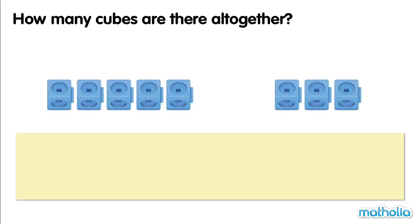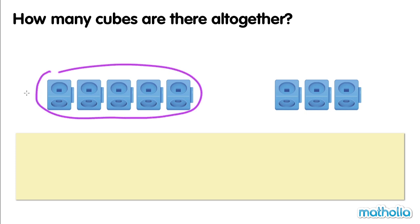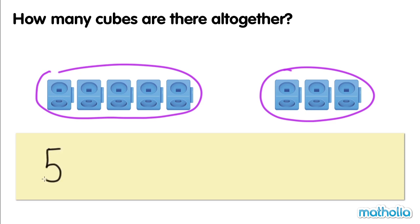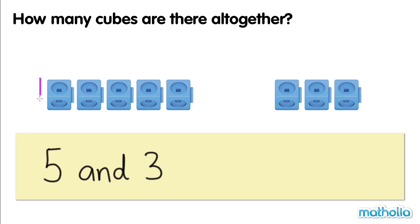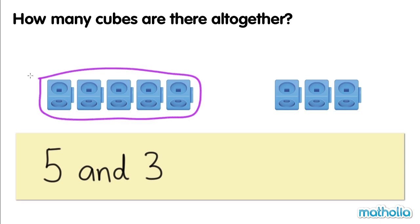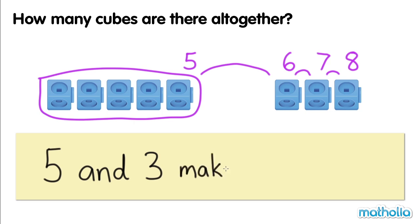How many cubes are there altogether? There are five cubes here and there are three cubes here. Five and three — let's add by counting on: five, six, seven, eight. There are eight cubes altogether. Five and three make eight.